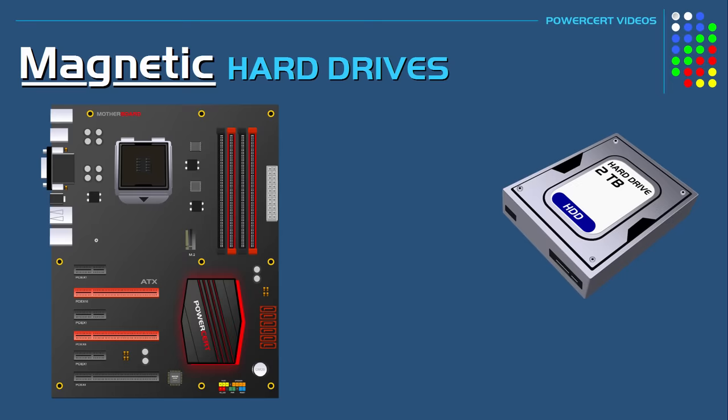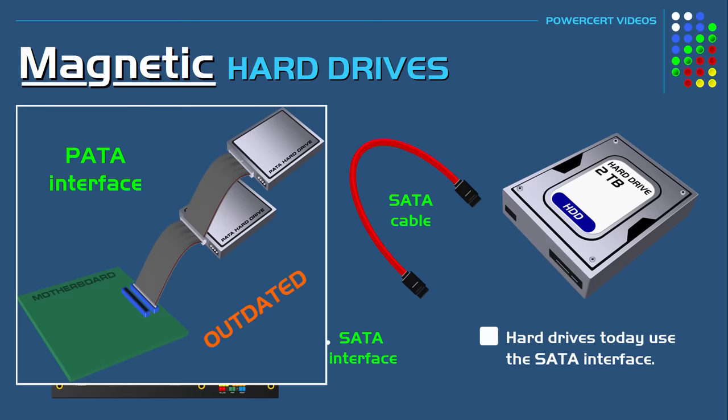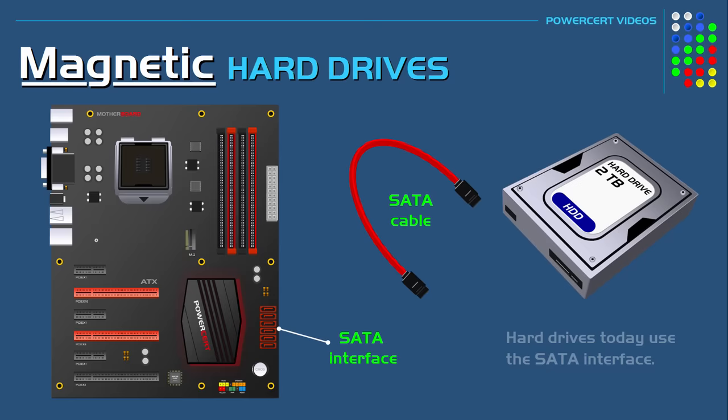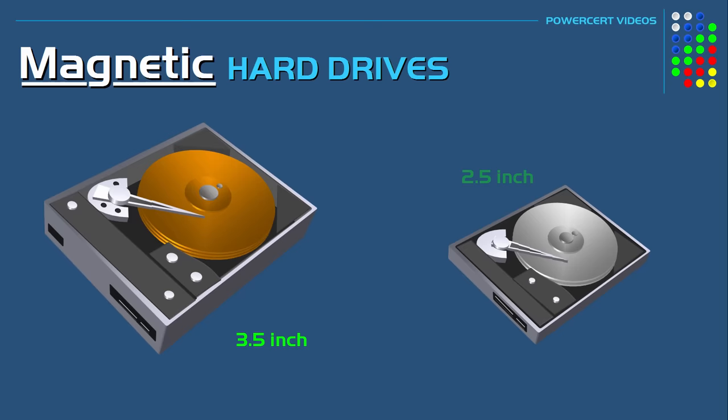Hard drives today use the Serial ATA interface, which is a newer standard that is faster than the outdated Parallel ATA interface. Instead of data traveling in a parallel path, the data travels in a serial path, meaning data travels one bit at a time. SATA drives have transfer speeds averaging six gigabits per second, which is considerably faster than the old Parallel ATA. Hard drives also come in two physical sizes: 3.5 inch drives used in desktop computers and servers, and 2.5 inch drives used in laptops.